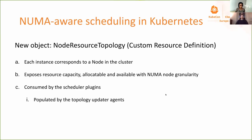Let's cover the components in a bit more detail and see what comes next in terms of roadmap, and how to get involved in this initiative. The Node Resource Topology object is an external object — a custom resource definition — which corresponds to one node in the cluster, so you have a one-to-one relationship between node objects and Node Resource Topology objects. What we find in this object are the counters for each NUMA zone, for each resource known by Kubernetes, about the capacity, the allocatable, and the available units for each resource.